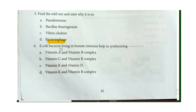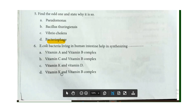E. coli bacteria living in the human intestine help in synthesizing Vitamin K and Vitamin B complex. The correct answer is Option D.